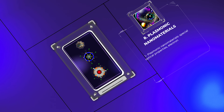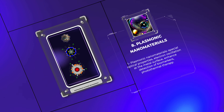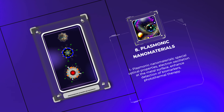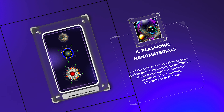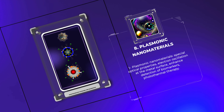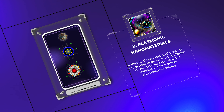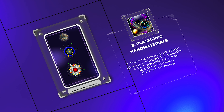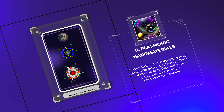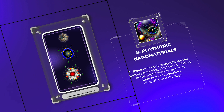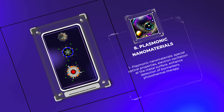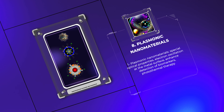Plasmonic nanomaterials, like gold nanoparticles or silver nanowires, have special optical properties due to electron oscillation at the metal surface. Their size, shape, and composition can be controlled to tune these properties for various uses in medical imaging, therapy, and sensing. Surface-enhanced Raman Scattering, SERS, is one application, enhancing the detection of biomarkers, drugs, or pollutants for early disease diagnosis or environmental monitoring. Plasmonic nanomaterials can also be used for photothermal therapy, selectively destroying cancer cells or target tissues with near-infrared light. This non-invasive approach has fewer side effects compared to traditional treatments.